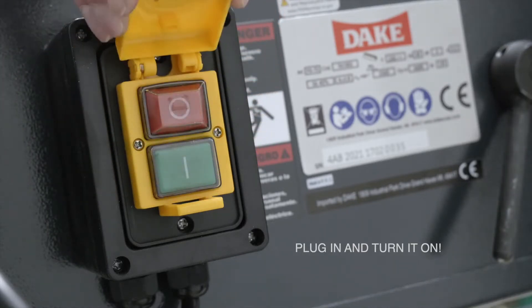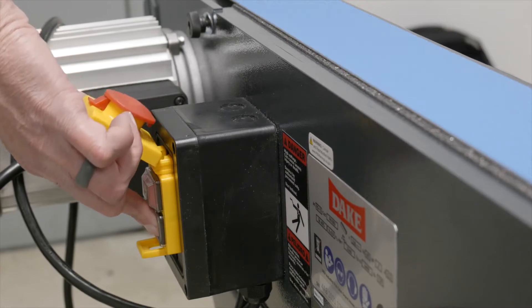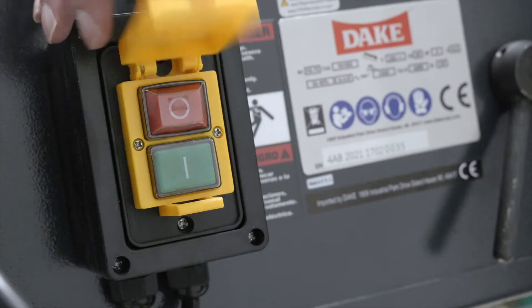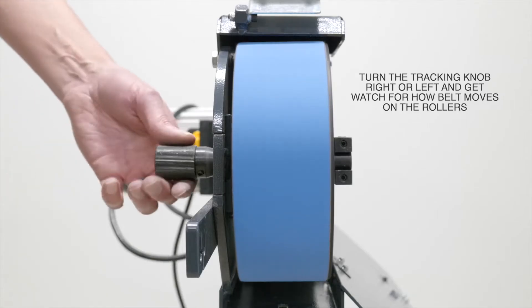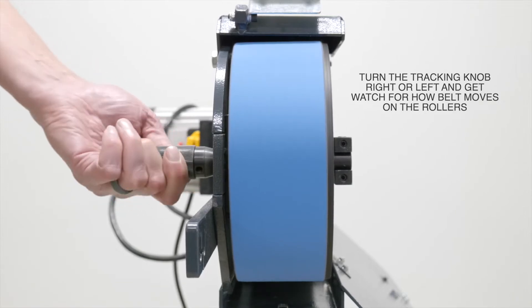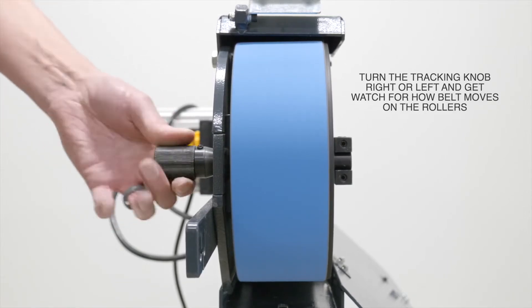Now you can plug in and turn on the grinder. Turn the tracking knob right or left and watch for how the belt moves on the rollers.